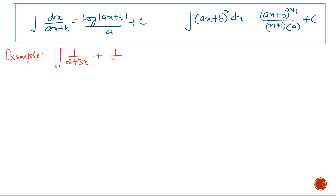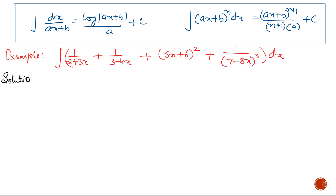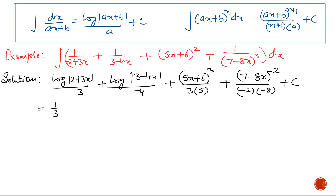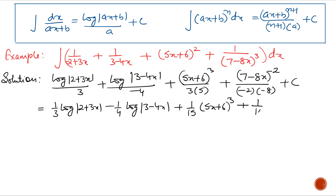Example: integrate 1/(2 + 3x) + 1/(3 − 4x) + (5x + 6)² + 1/(7 − 8x)³ with respect to x. The answer to the first part is log|2 + 3x| / 3. Next is log|3 − 4x| / (−4). Next is (5x + 6)³ / (3 × 5). And next is (7 − 8x)^(−2) / [(−2)(−8)] + c. Simplifying: (1/3)log|2 + 3x| − (1/4)log|3 − 4x| + (1/15)(5x + 6)³ + (1/16) · 1/(7 − 8x)² + c.